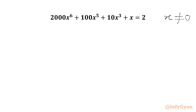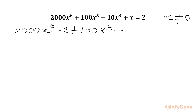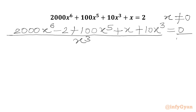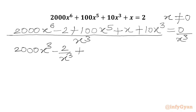Now we will write all the terms to one side: 2000x⁶ minus 2, plus 100x⁵, then plus x, then 10x³, and RHS will be 0. Since x cannot equal 0, we can divide our equation by x³ on both sides. So 2000x⁶ over x³ is x³, minus 2 over x³, then 100x⁵ over x³ is 100x², x over x³ is 1 over x², and 10x³ over x³ is 10. RHS is 0.